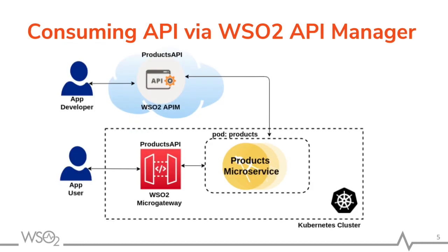As an app developer, I can consume the products API in the API management portal. Or as an application user, I can consume the products API in the WSO2 micro-gateway. So as you can see, we support hybrid deployment. That is, you can have your gateway in your Kubernetes cluster and run your API manager portal in the Google Cloud.